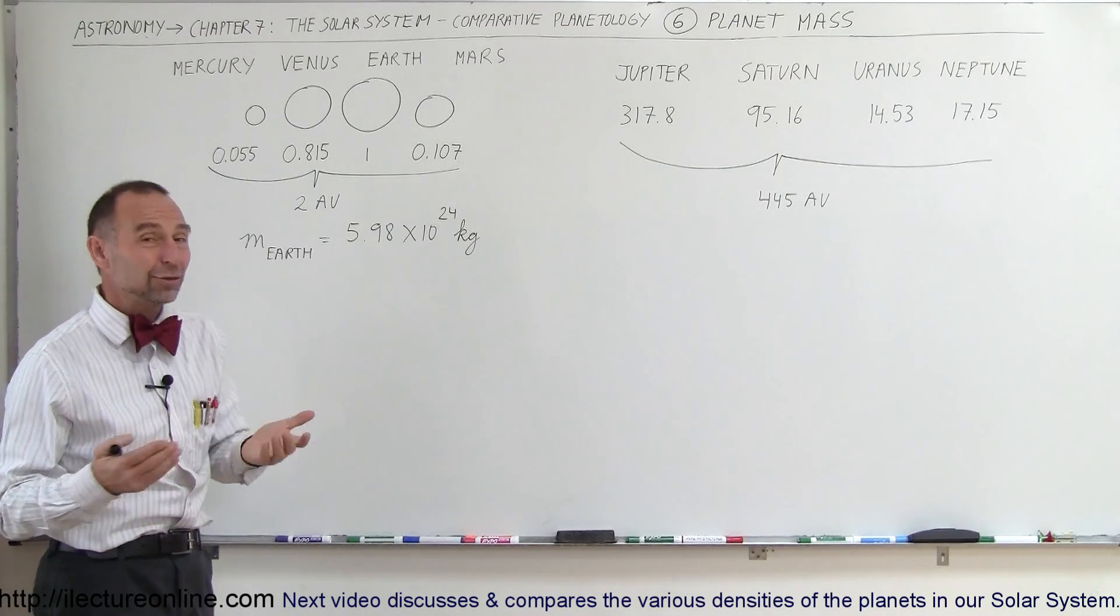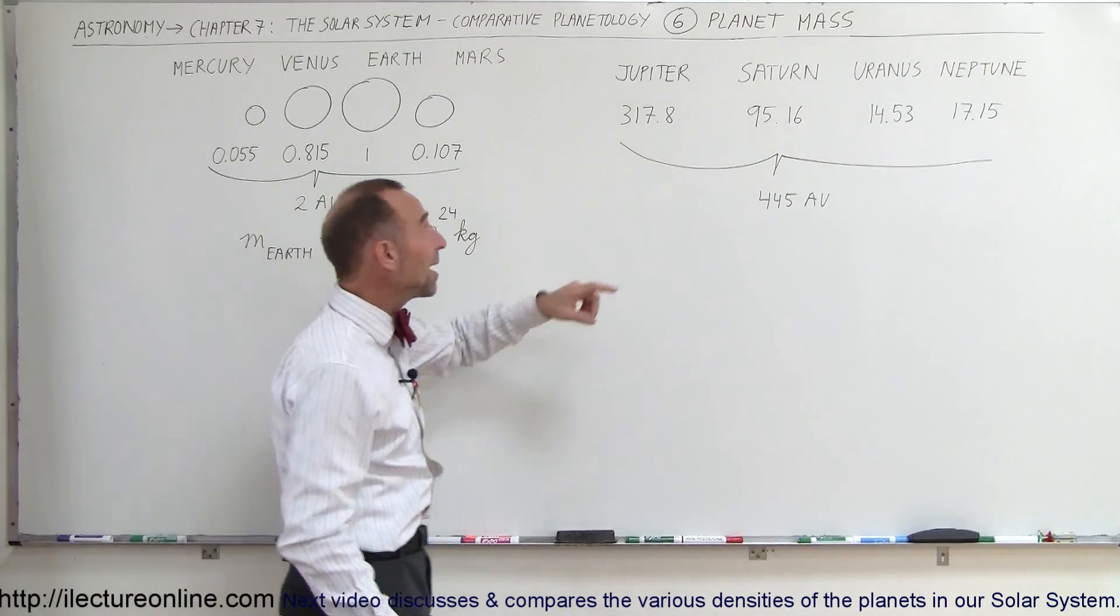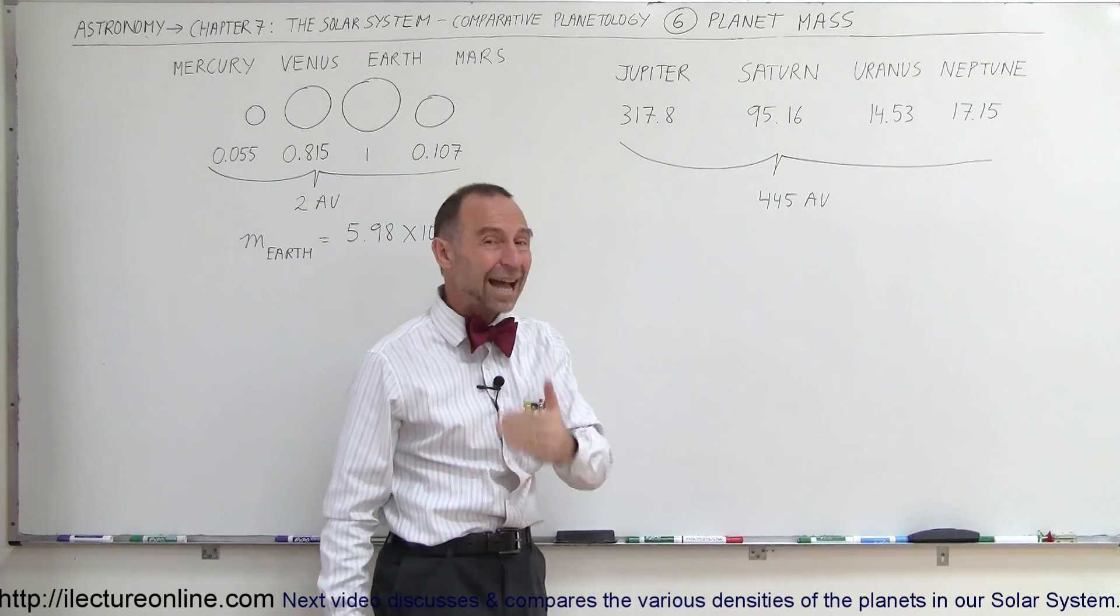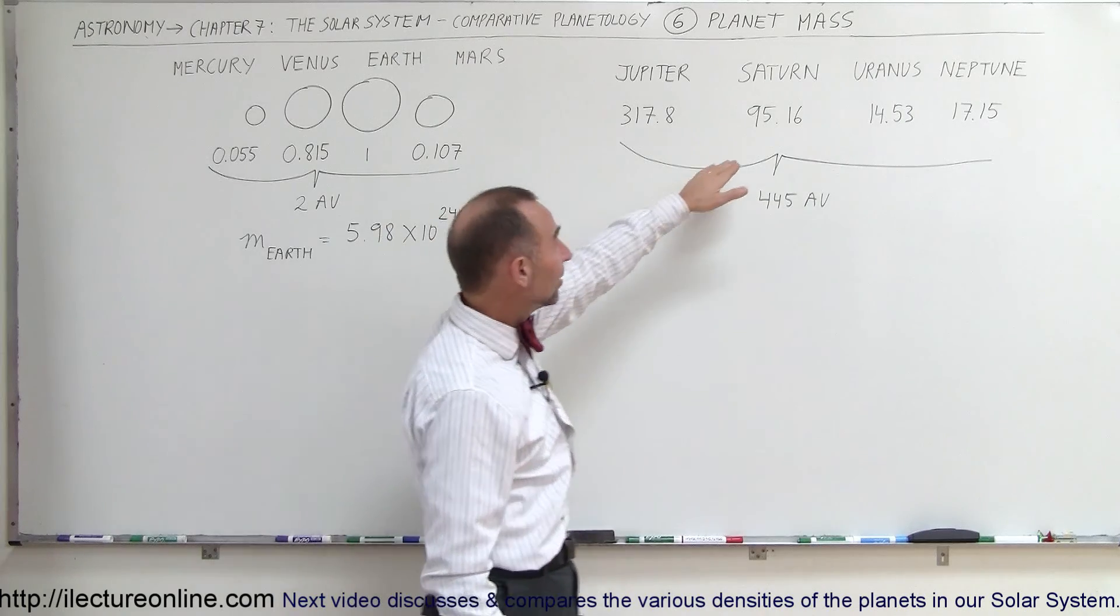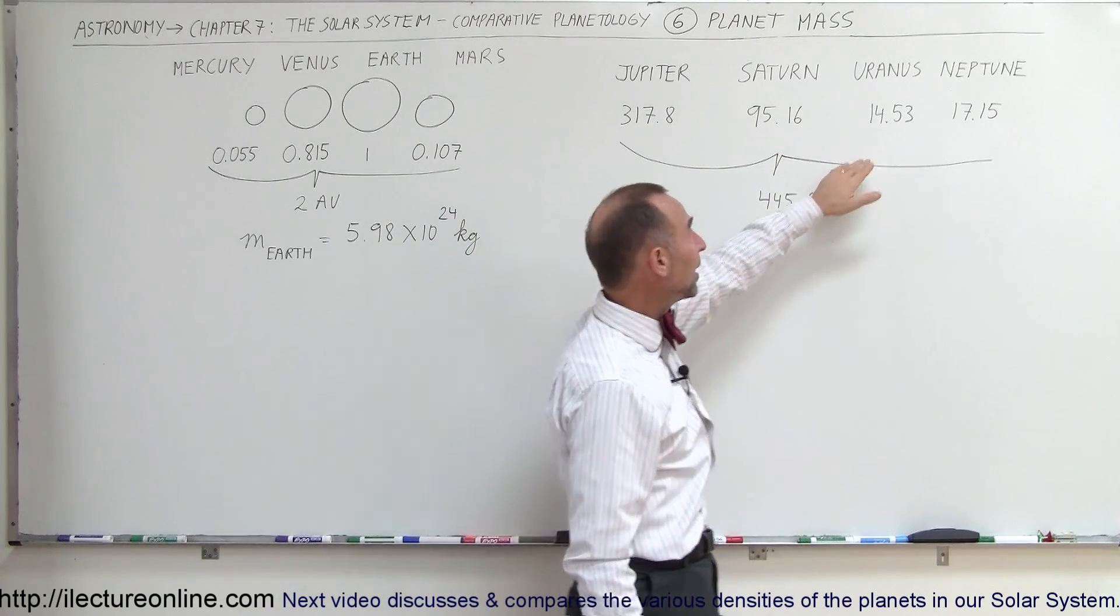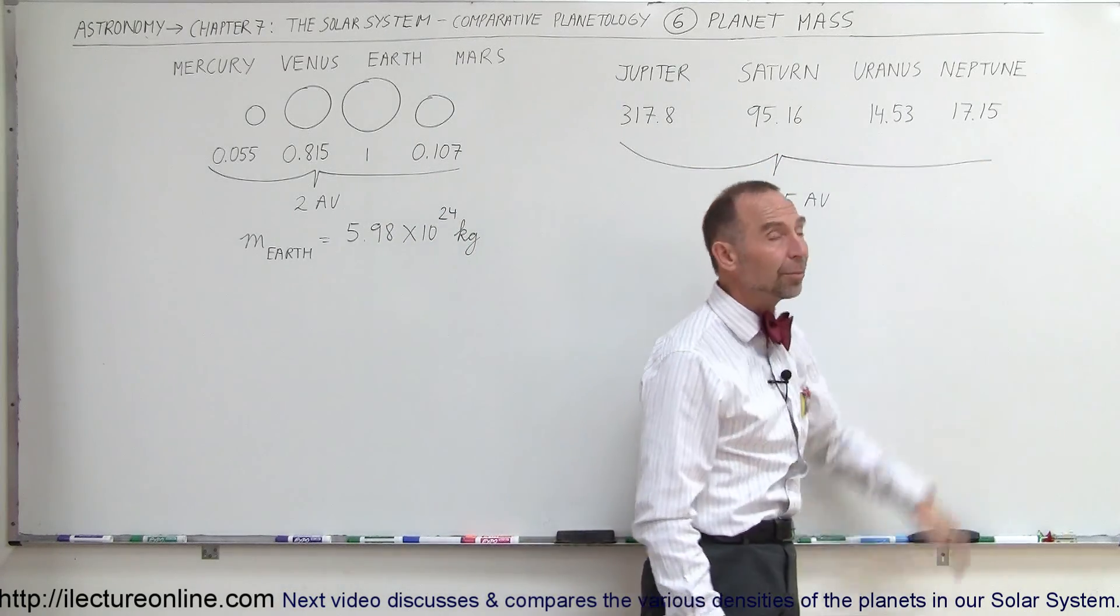How does that compare to the Jovian planets? Notice the mass of Jupiter is 317.8 times the mass of the Earth. That is enormous in size. Saturn is 95 times the mass of the Earth, Uranus 14.5, and Neptune a little bit over 17.